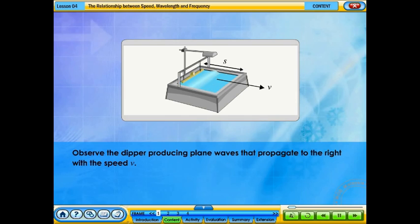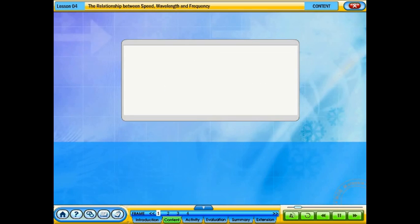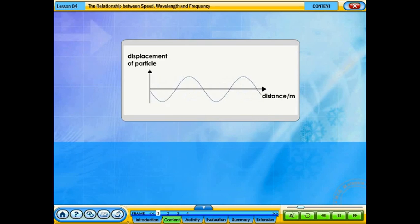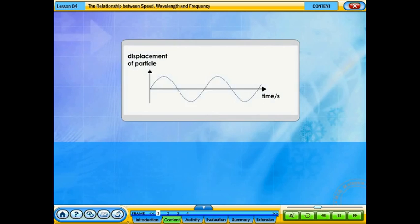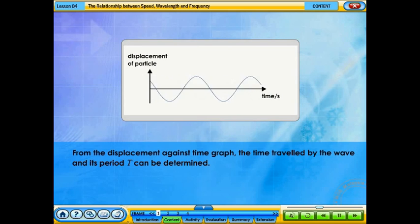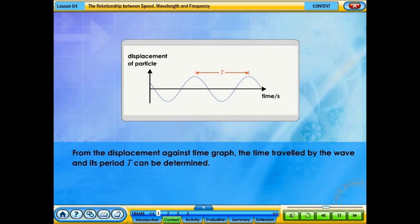Observe the dipper producing plane waves that propagate to the right with speed V. From the displacement against distance graph, the distance travelled by the wave, the amplitude A, and its wavelength lambda can be determined. From the displacement against time graph, the time travelled by the wave and its period T can also be determined.